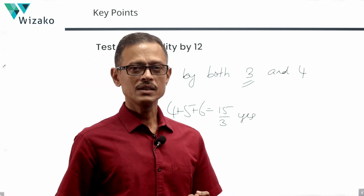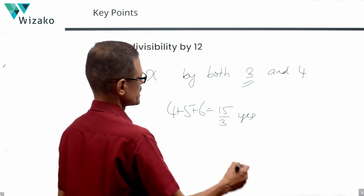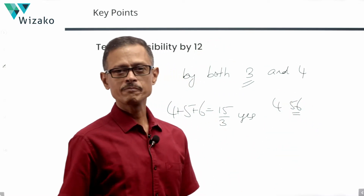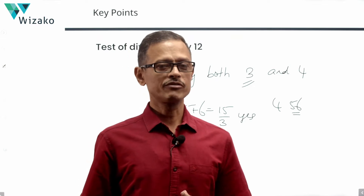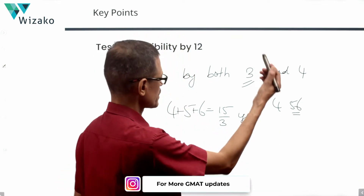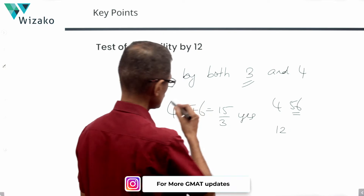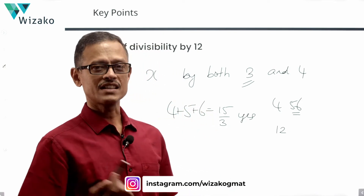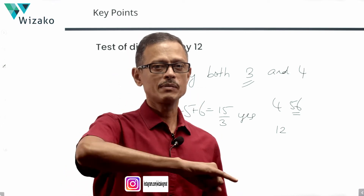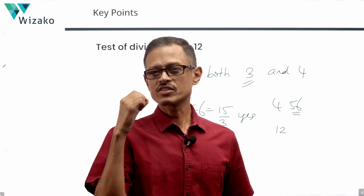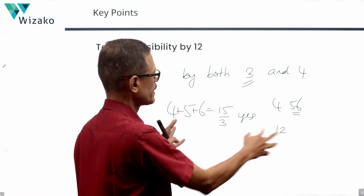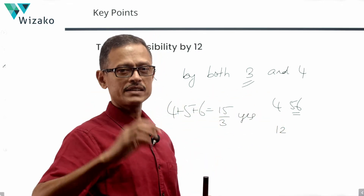What is the test of divisibility by 4? Pick the rightmost two digits. For 456, the rightmost two digits are 5 and 6. Is 56 divisible by 4? Yes — 14 times 4 is 56. So 456 is divisible by 4 as well. Incidentally, 456 is a number divisible by 12, since it satisfies both divisibility by 3 and by 4.